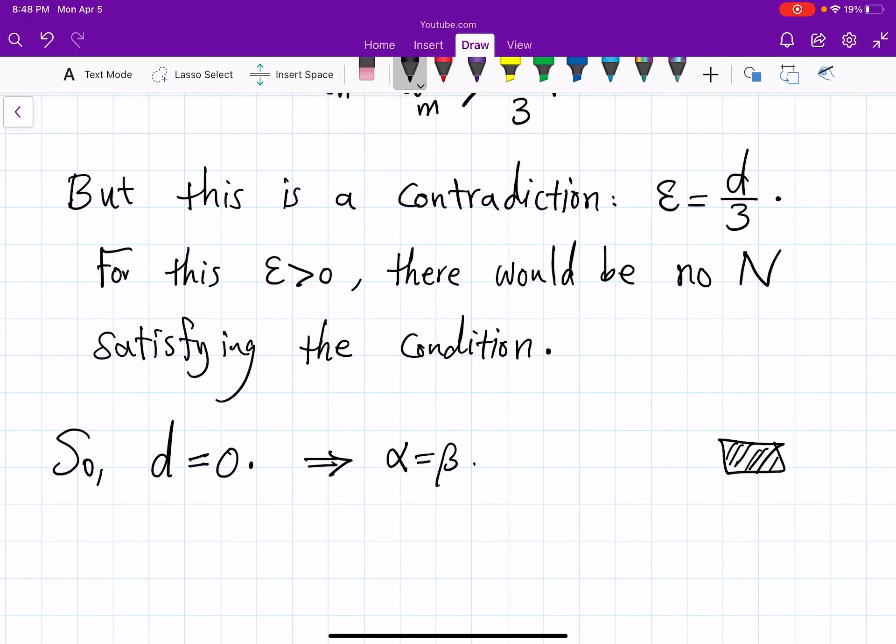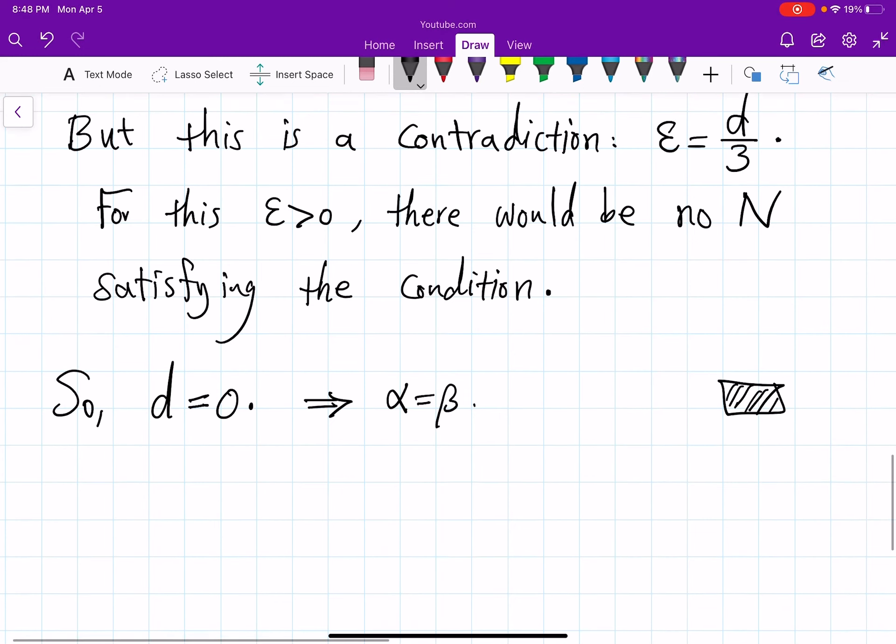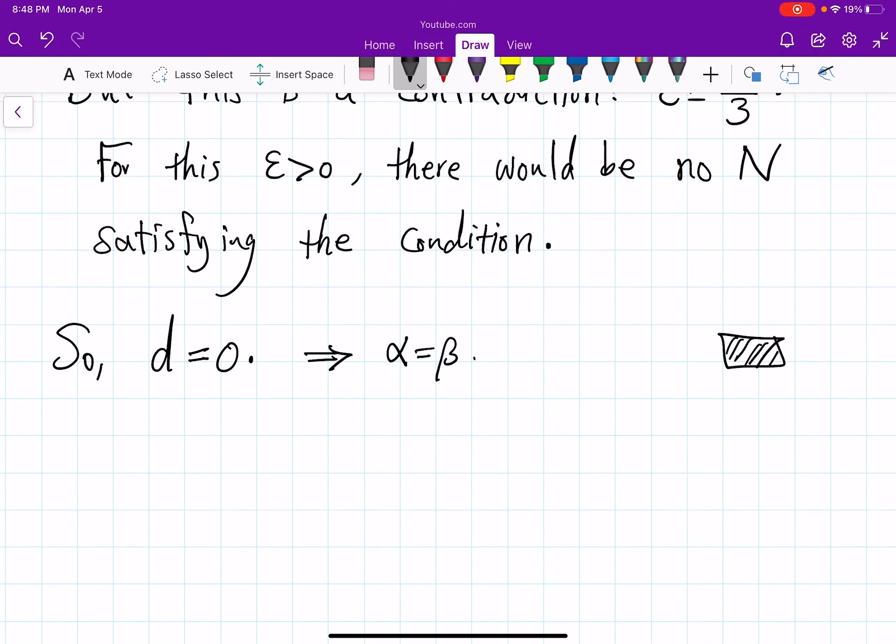and that's the end so friends we kind of have proven the following that if some sequence is 50% Cauchy then it's actually 100% convergent